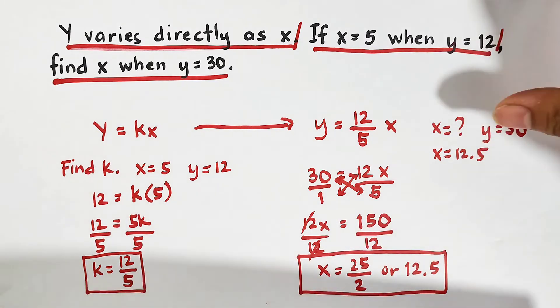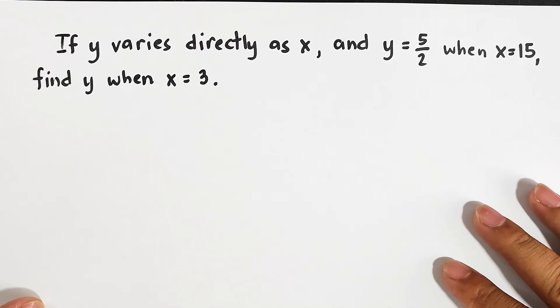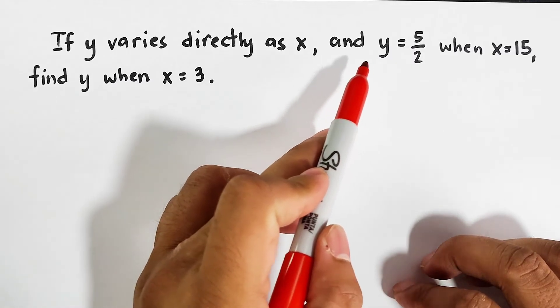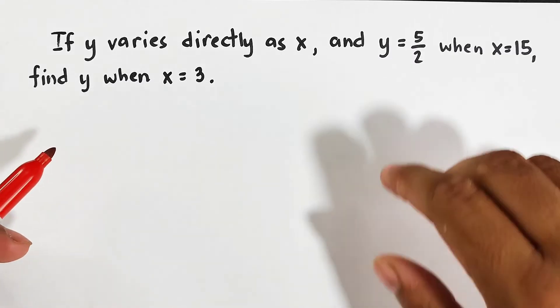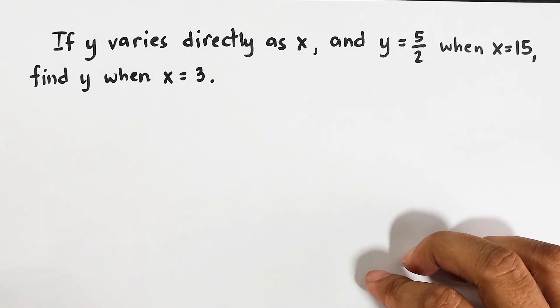Okay? So let's continue with item number 2. For item number 2, what we have here is this problem. If y varies directly as x and y is equal to 5 over 2, as you can see, fraction. When x is equal to 15, find y when x is equal to 3.